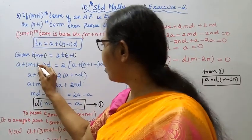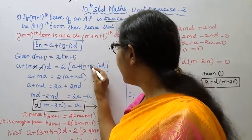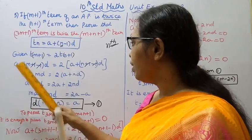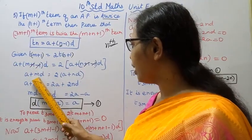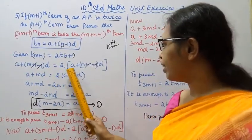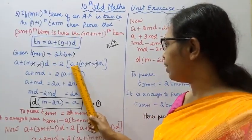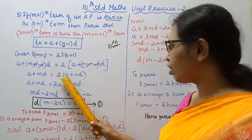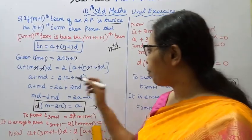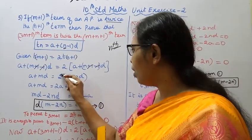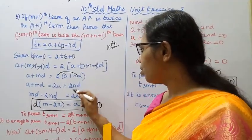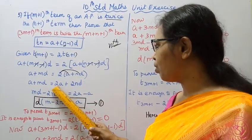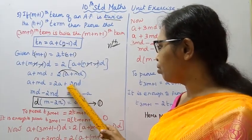The plus 1 minus 1 cancels out. So we get: A plus M into D equals 2 bracket A plus N into D. Expanding: A plus MD equals 2A plus 2ND.